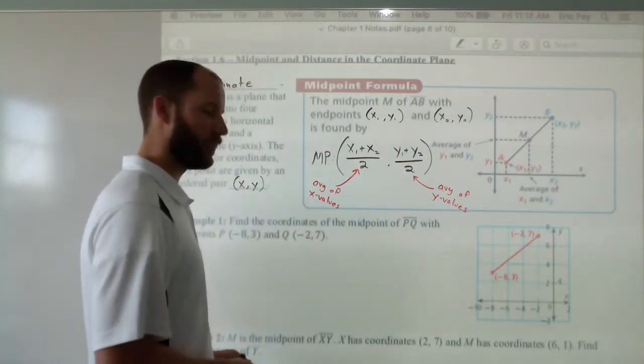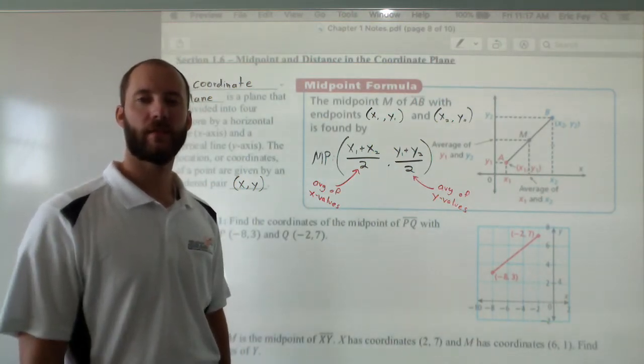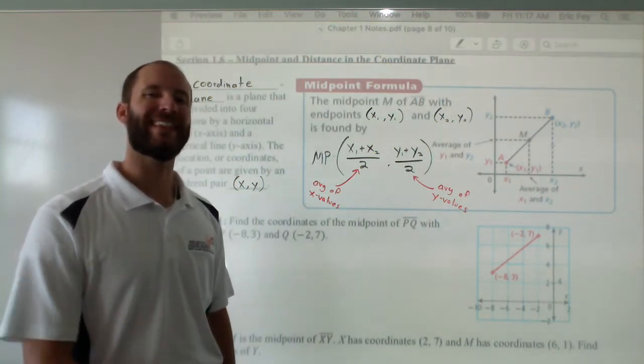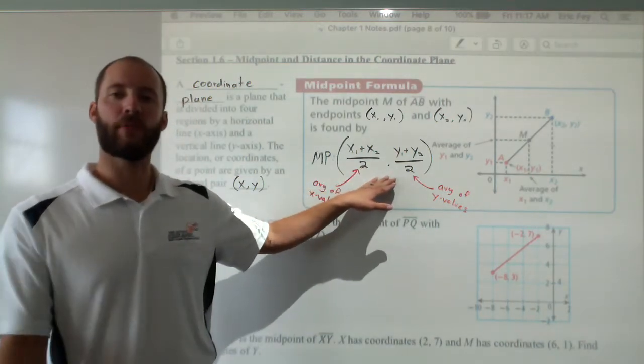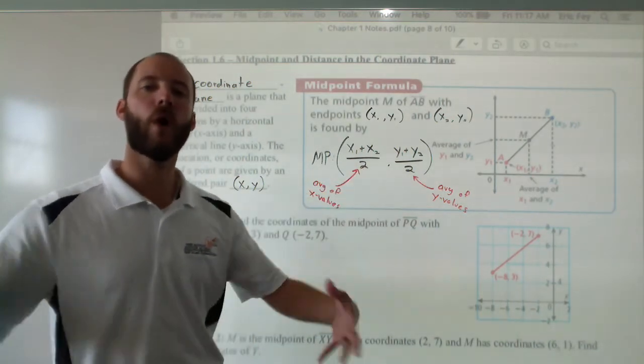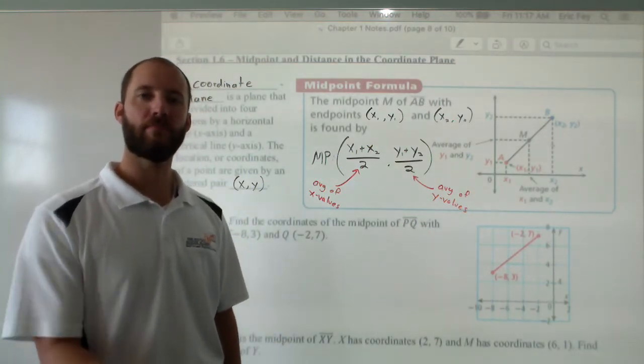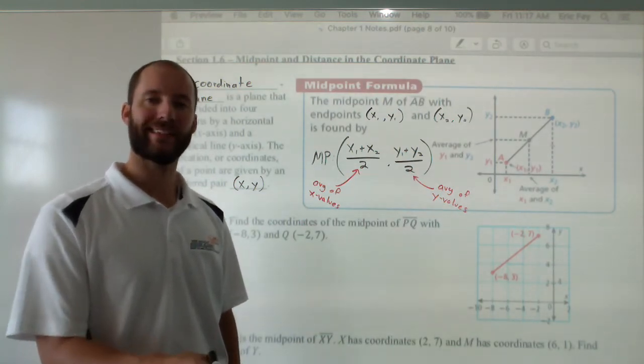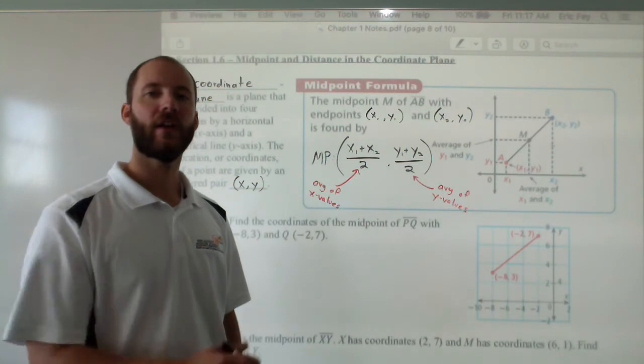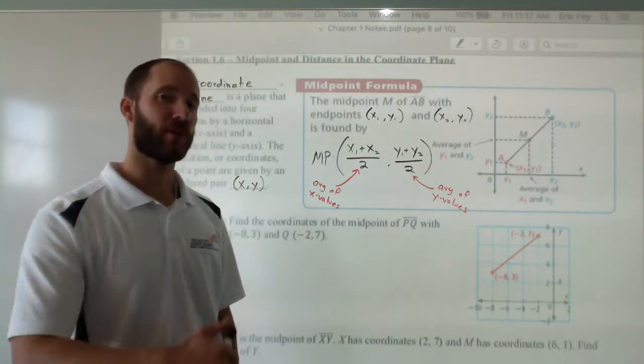I find that if someone knows why they're doing something, they're much better at remembering what they need to do. So rather than just memorize a formula, plug in numbers, and calculate it, what are you actually doing? You're finding averages. The midpoint formula is finding averages of your x's, finding averages of your y's. And if you can remember that, you can remember the formula.